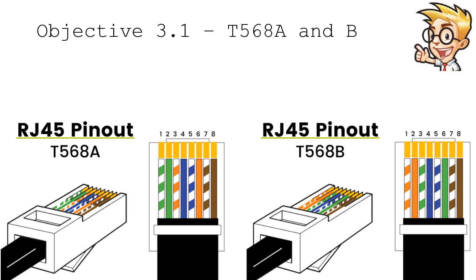Let's look at the pins. You can see that pin one and two are different between A and B — we're dealing with white-and-green versus white-and-orange. We can also see that the orange and green colors have been swapped between these two standards at pins three and six. Interestingly, pins four and five, and seven and eight, are exactly the same between the A and B standards. Here are the color schemes for 568A and 568B.